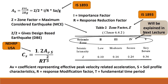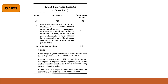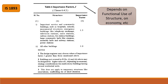The importance factor I in IS 1893 depends on the functional use of the structure, the economy, and many other parameters. A table from IS 1893 gives the I factor. For important service and community buildings such as hospitals, schools, monumental structures, emergency buildings like telephone exchanges, television stations, radio stations, railway stations, fire stations, large community halls like cinemas, assembly halls, subway stations, and power stations, I is taken as 1.5.